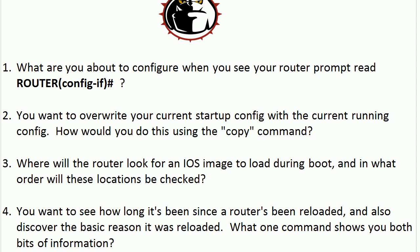Now, where is the router going to look for the IOS image? First, it's going to look in flash — that is the default. Second, it's going to look toward a TFTP server if we've configured the router to look for one. And then third, it's going to look in ROM. So again, that's flash, TFTP server, and ROM.